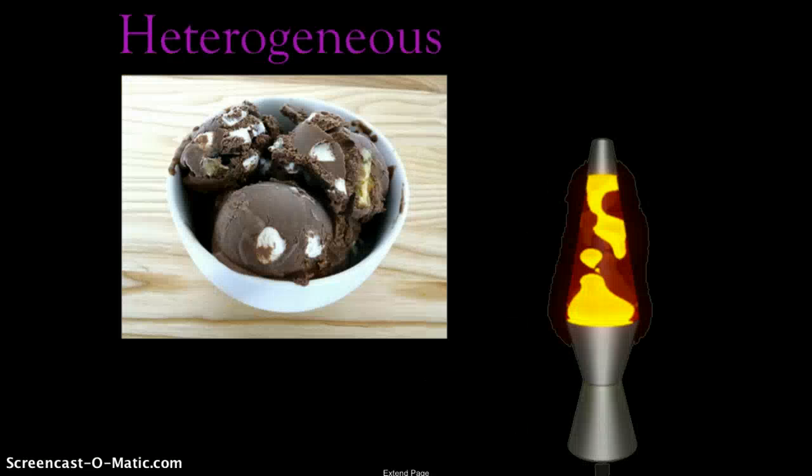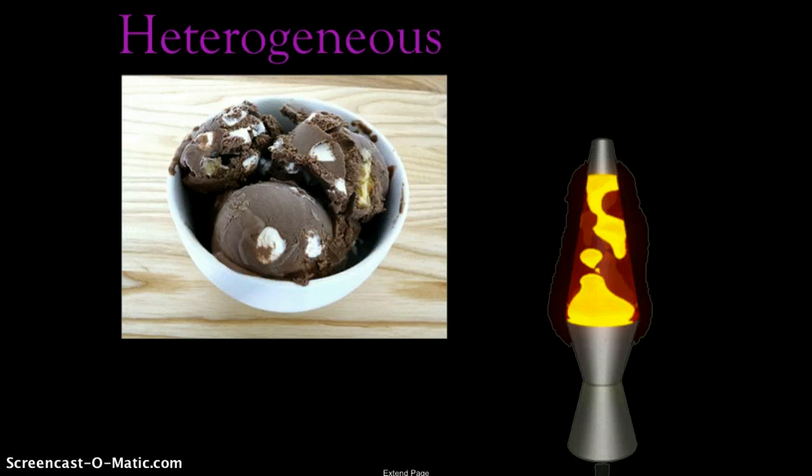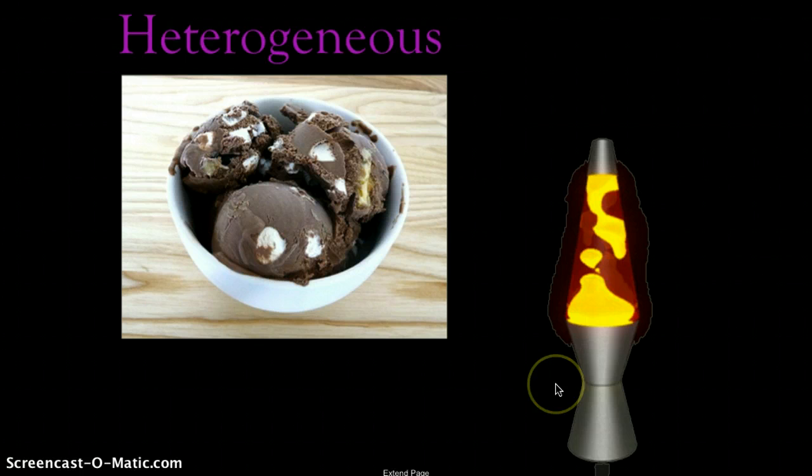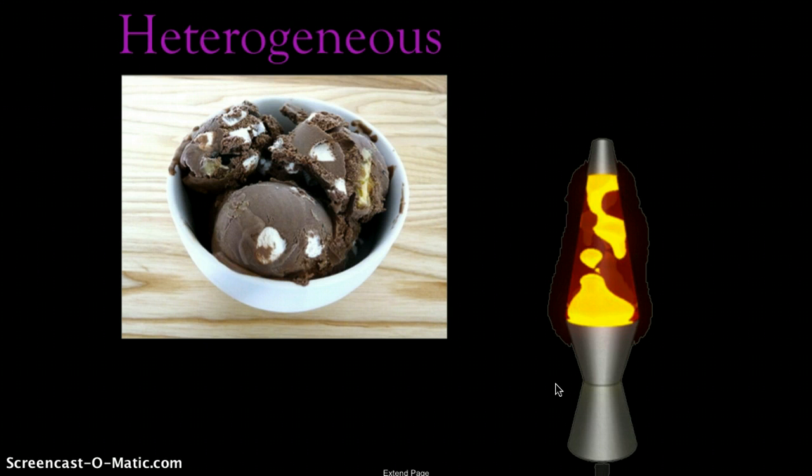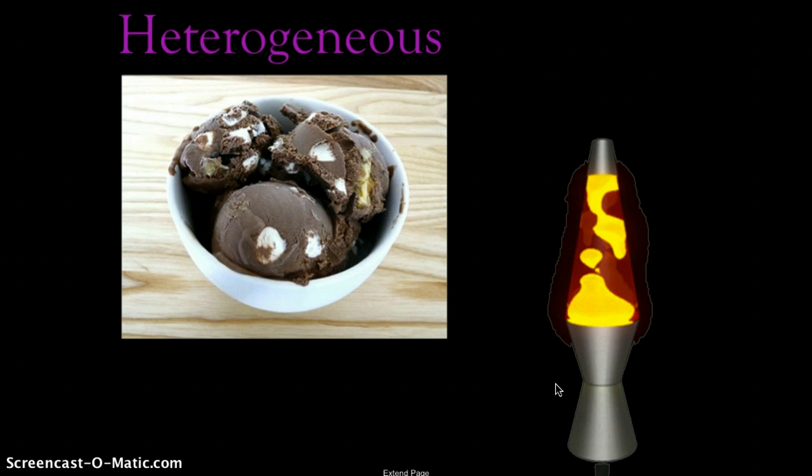Now heterogeneous mixtures: I think of rocky road ice cream. Every bite is different - you don't get the same number of marshmallows or nuts along with the chocolate ice cream with every bite, so this is heterogeneous, it's different mixed throughout. A lava lamp would be a good example of a heterogeneous mixture - the oil and the water. And as you heat it up, the oil will move throughout the water creating that eerie sense of lighting, but it's a heterogeneous mixture because it's not consistent, not the same throughout.